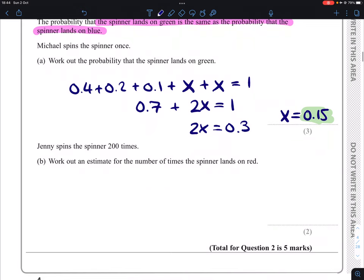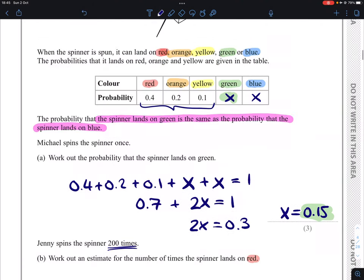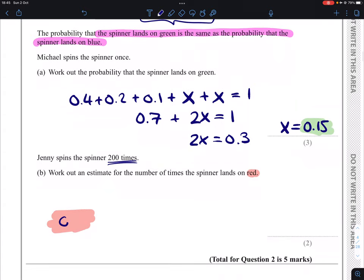Jenny spins the spinner 200 times. Work out an estimate for the number of times the spinner lands on red. We take our probability of red, which from our table is 0.4, and multiply that by 200 because we are going to spin the spinner 200 times.